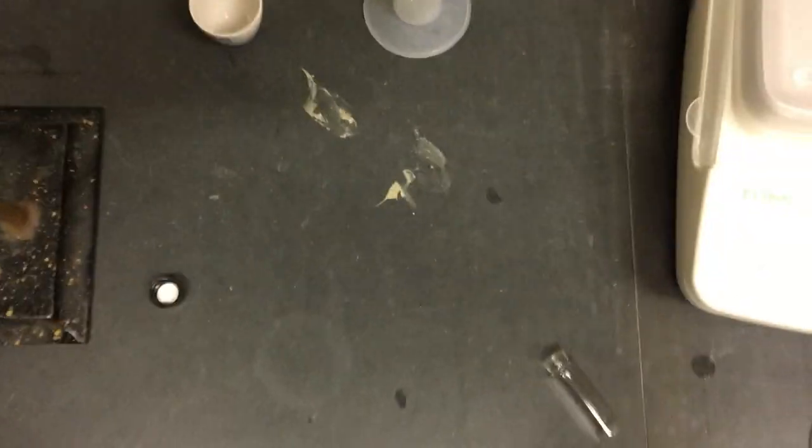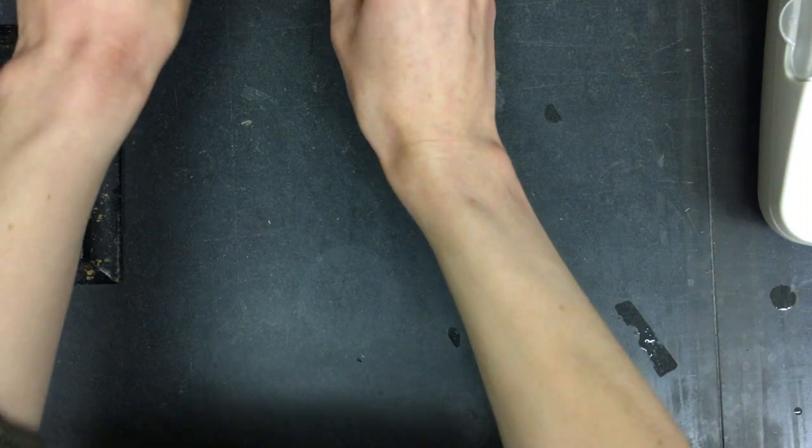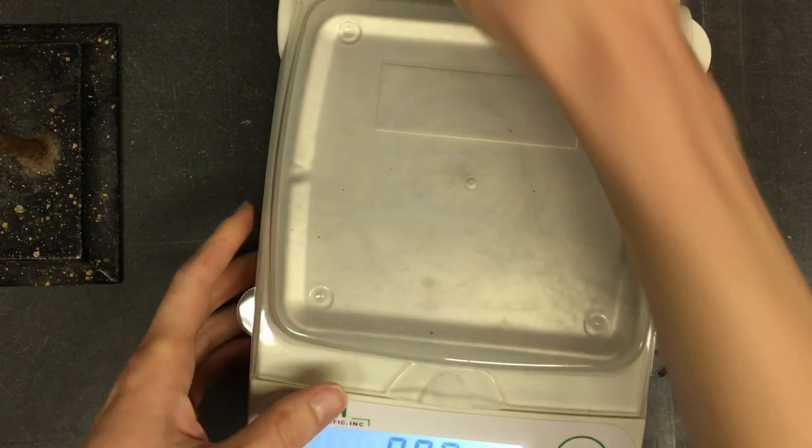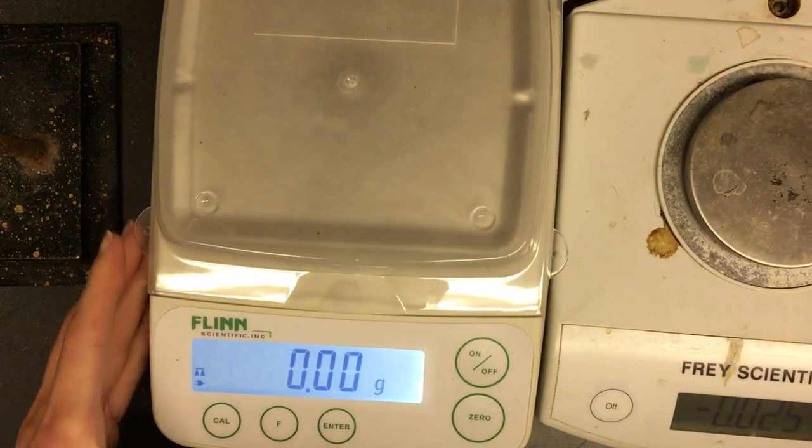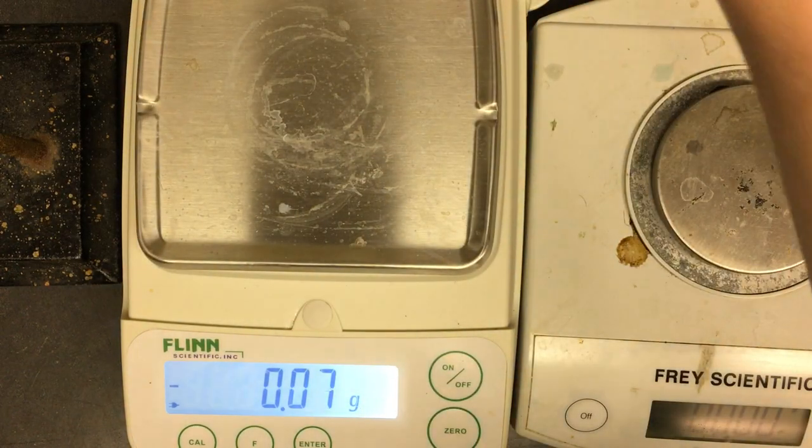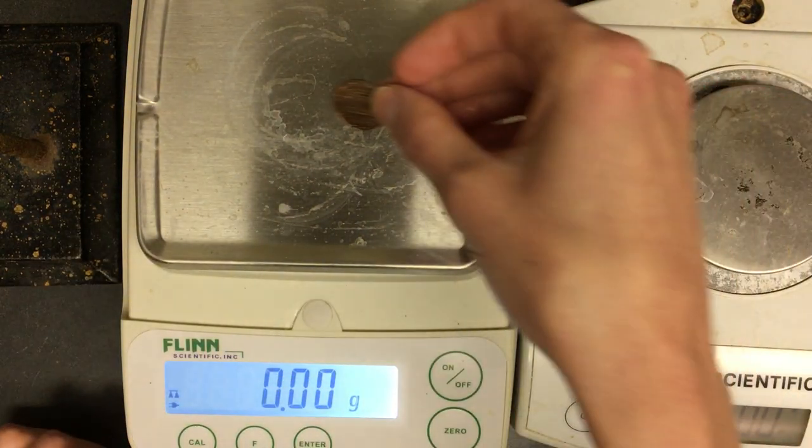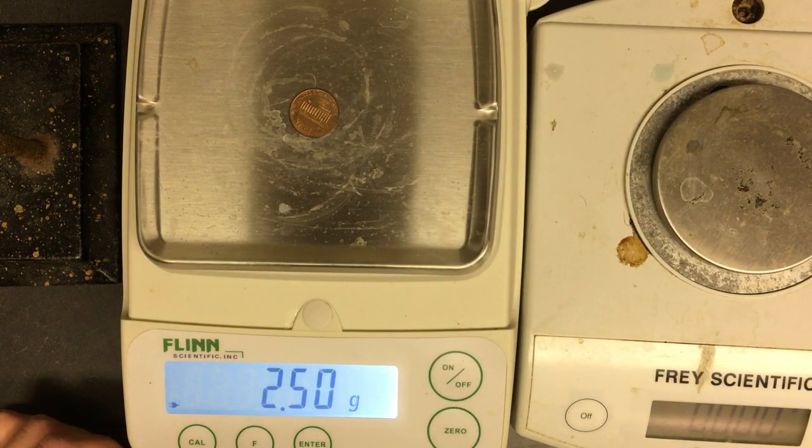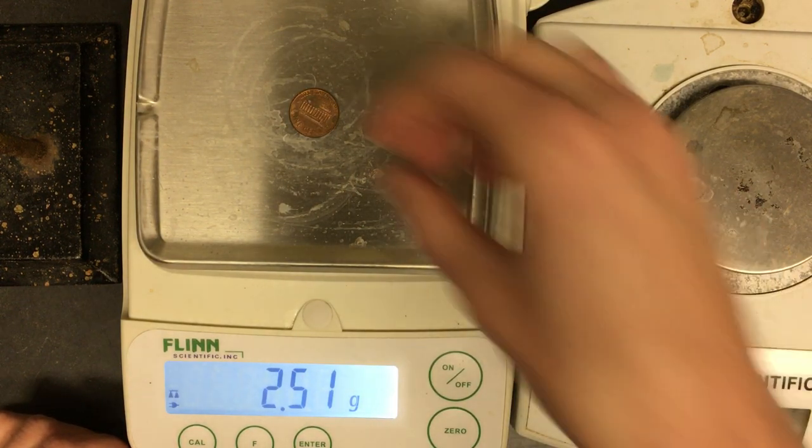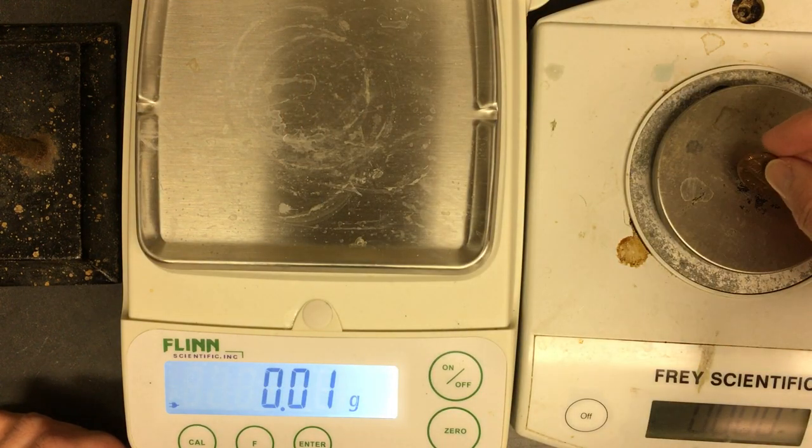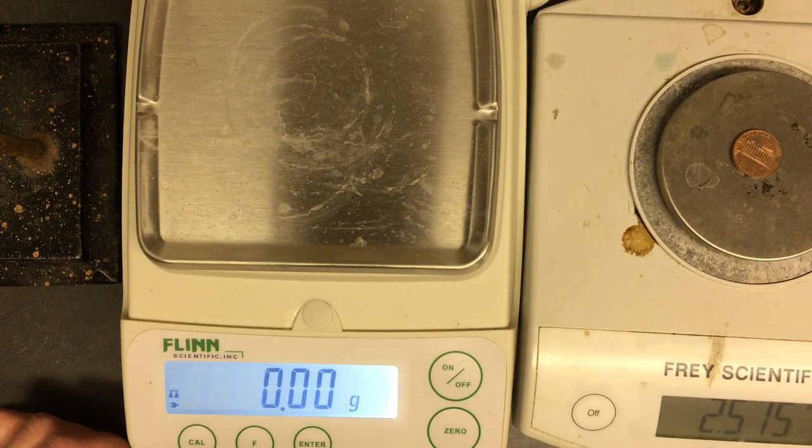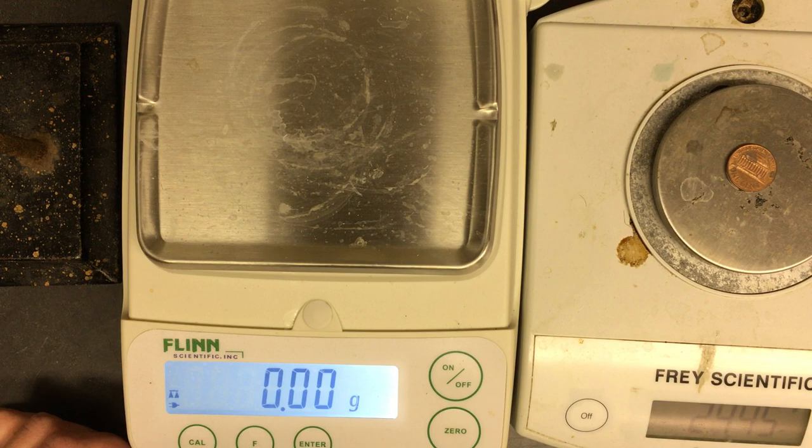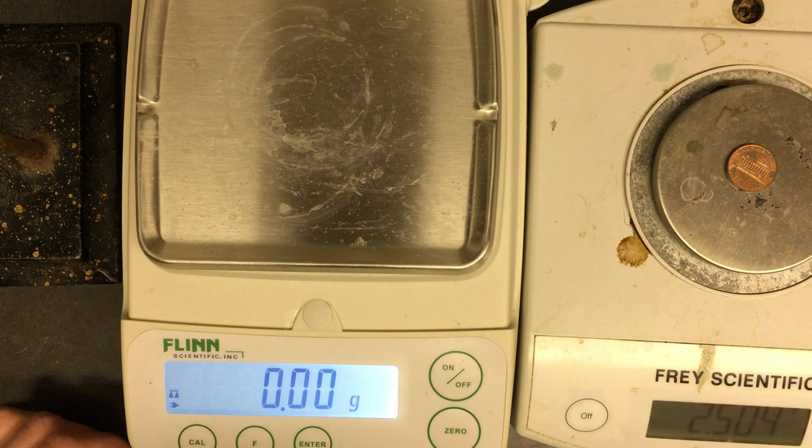Now we're going to do our mass measurements. So I'm going to pull the scales over here. So first, we're going to measure a penny. So there's a penny on the centigram balance. And then here is the penny on the milligram balance. That says 2.504, if you can't read it.